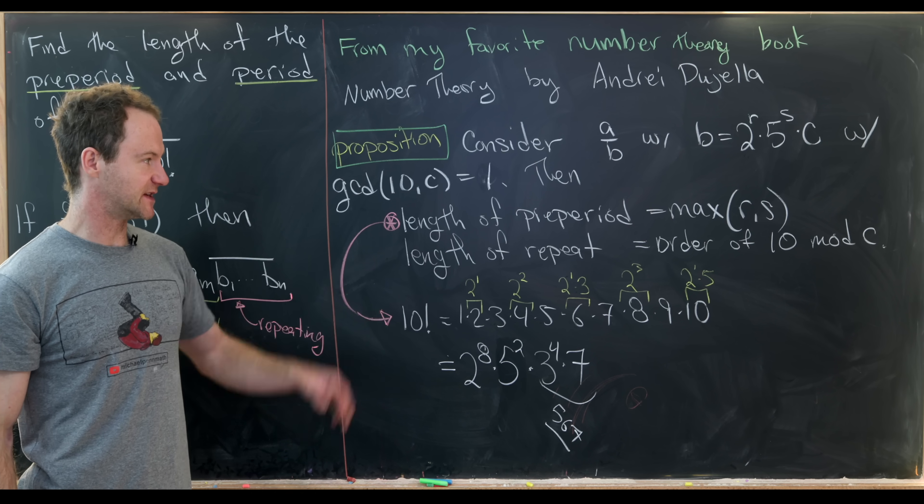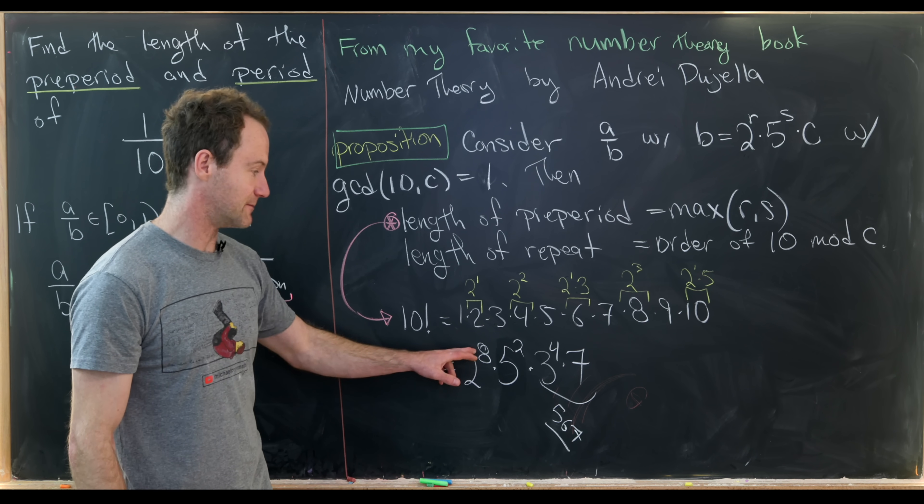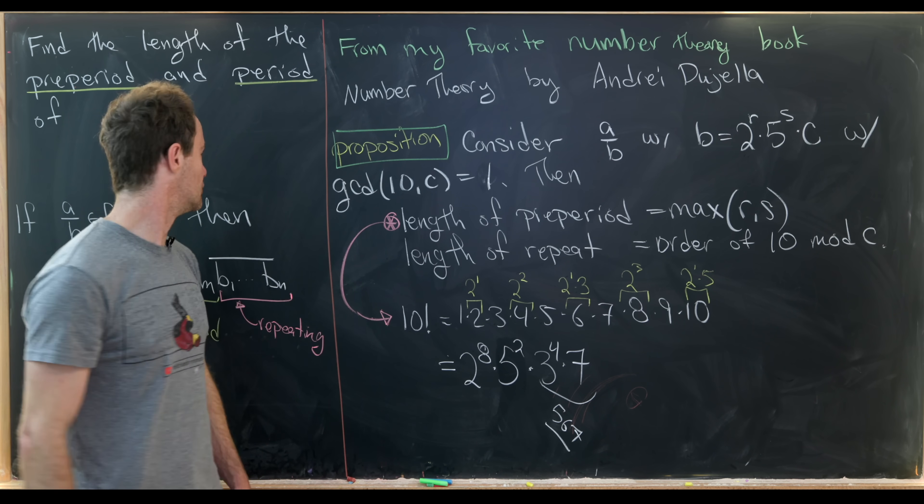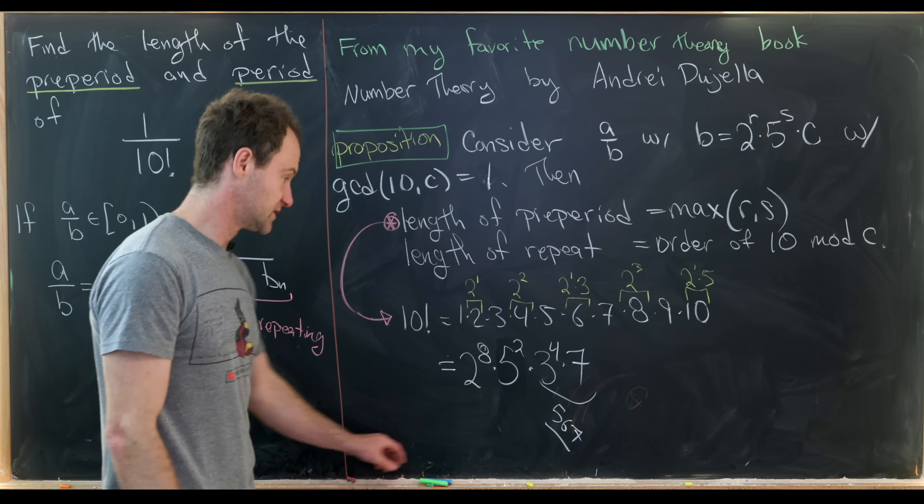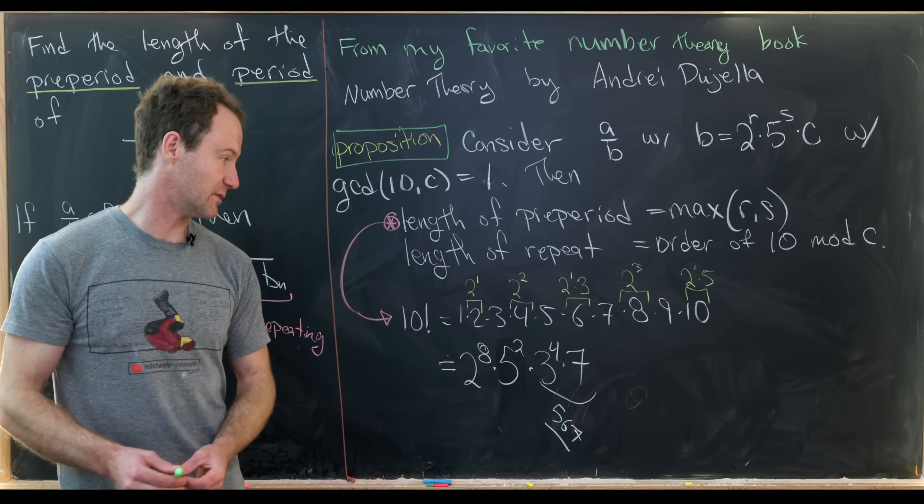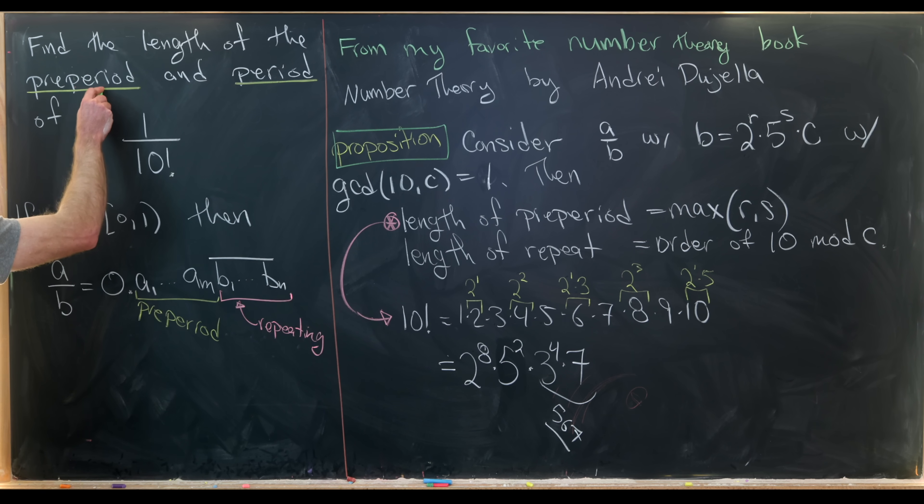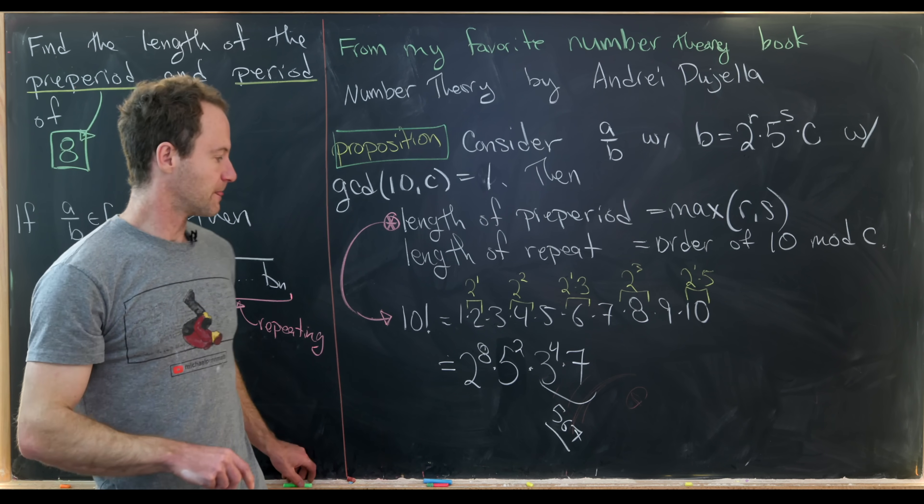So notice the first part says that the length of the pre-period is the maximum of the powers of 2 and 5. So it's pretty easy to take the maximum of 8 and 2, and you'll see that we just get the number 8. So that means the length of this pre-period is in fact the number 8.